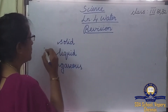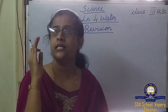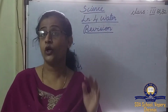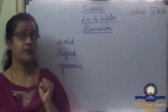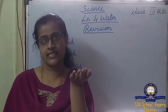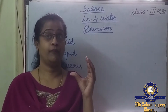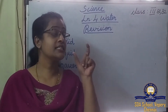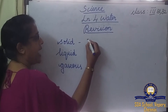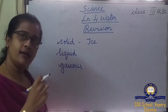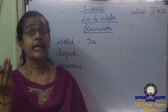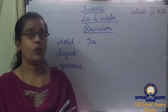The three forms of water are solid, liquid, and gaseous. When you cool the water, it freezes — it changes into ice. Ice is the solid form of water. Heat makes ice melt.